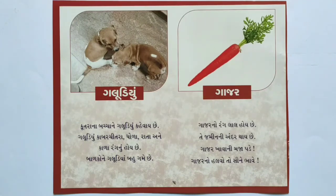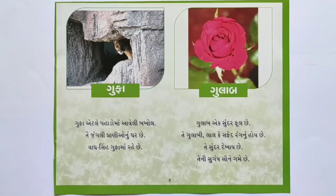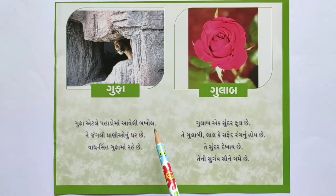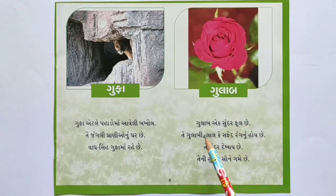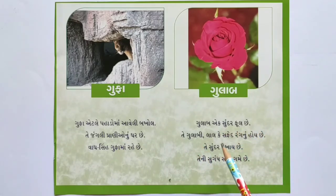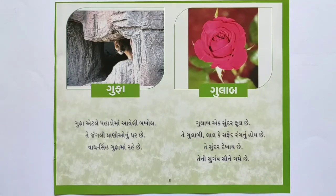હવે જાતે વાંચો. ખૂબ સરસ! ગુફા - ગુફા એટલે પહાડ/ખડકમાં આવેલી બખોલ. તે જંગલી પ્રાણ્યોનું ઘર છે. વાઘ-સિંહ ગુફામાં રહે છે. ગુલાબ - એક સુંદર ફૂલ છે. તે ગુલાબી, લાલ કે સફેદ રંગનું હોય.